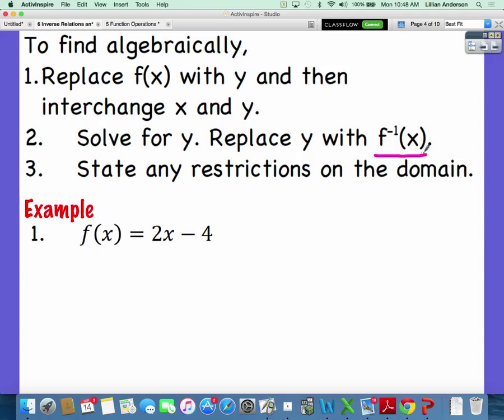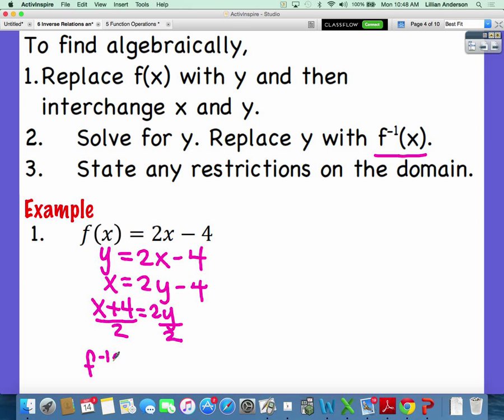If it passes, then you replace f of x with y, and then interchange x and y, basically switch. Then you need to solve for y. Once you've done that, you replace it with the proper notation to make sure that you are indeed identifying the inverse. And then, of course, state the restrictions in the domain. So, over here, this function for number one, what kind of function is it? It's a linear. And we just talked about this. Do linear functions pass the horizontal line test? Yes, they do.